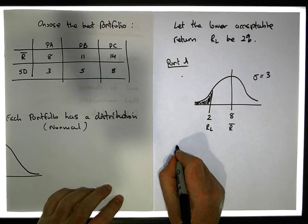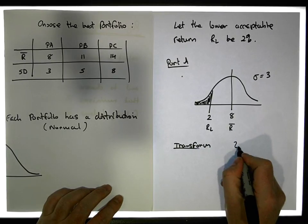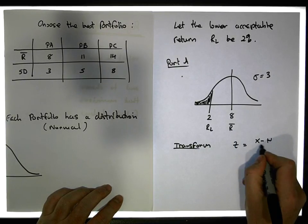So we standardize, so we transform. Don't forget by transform, we're using Z equals X minus mu all over sigma.